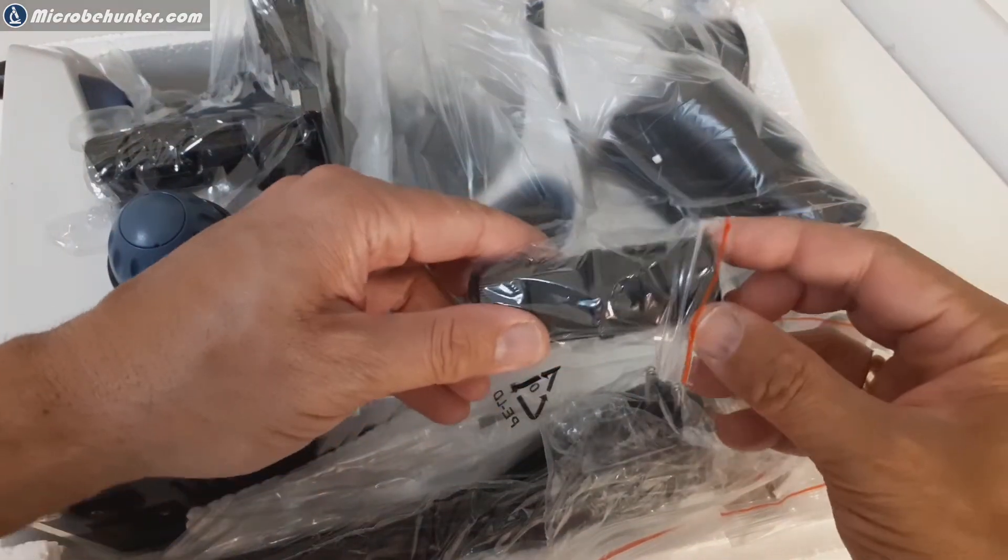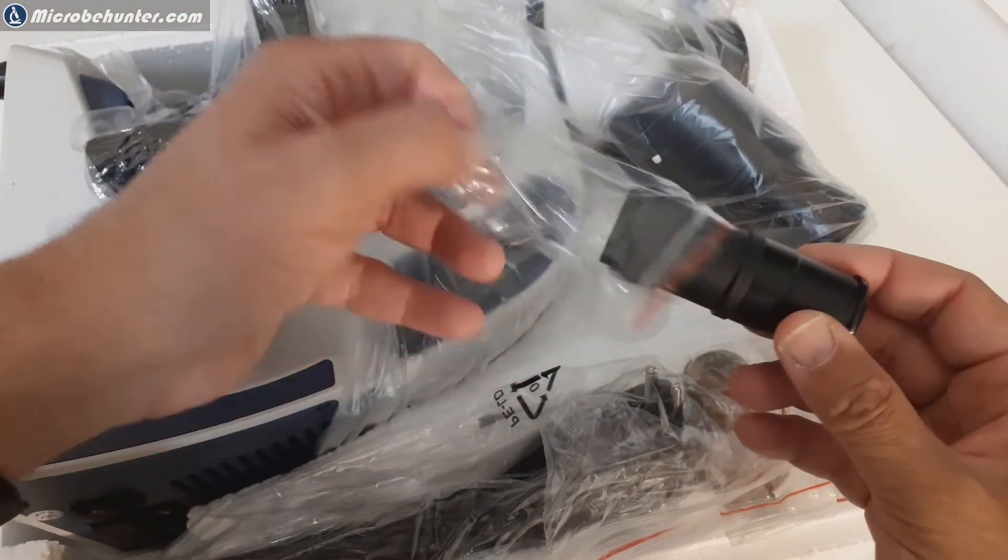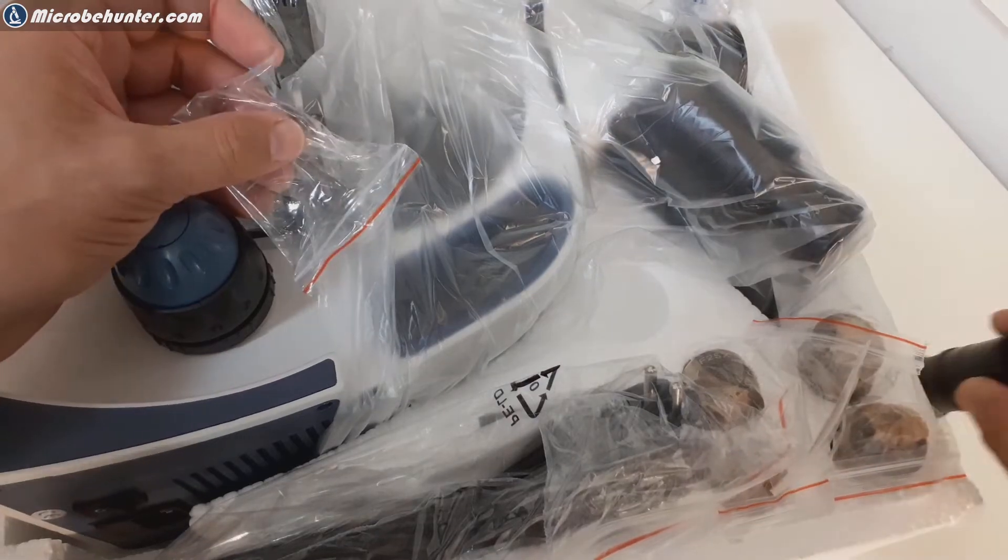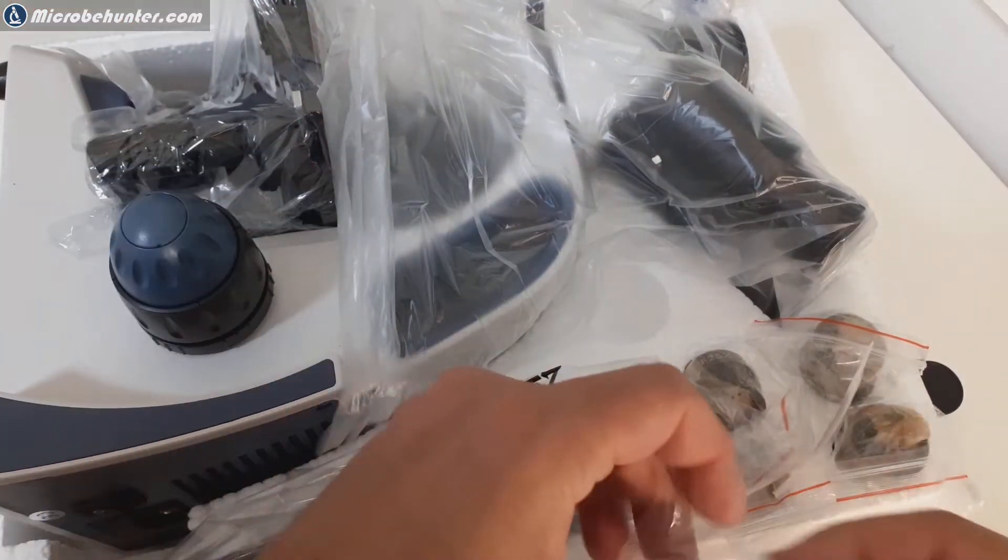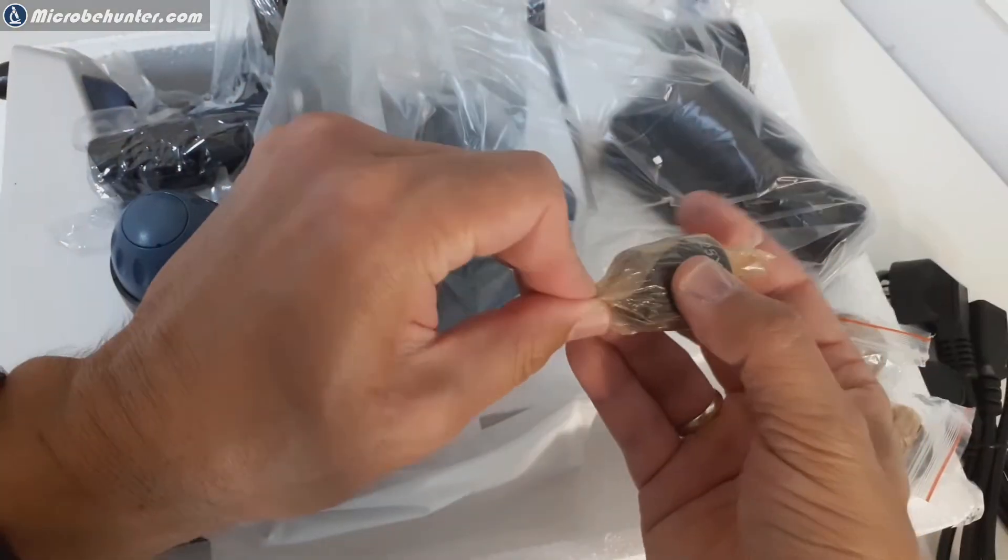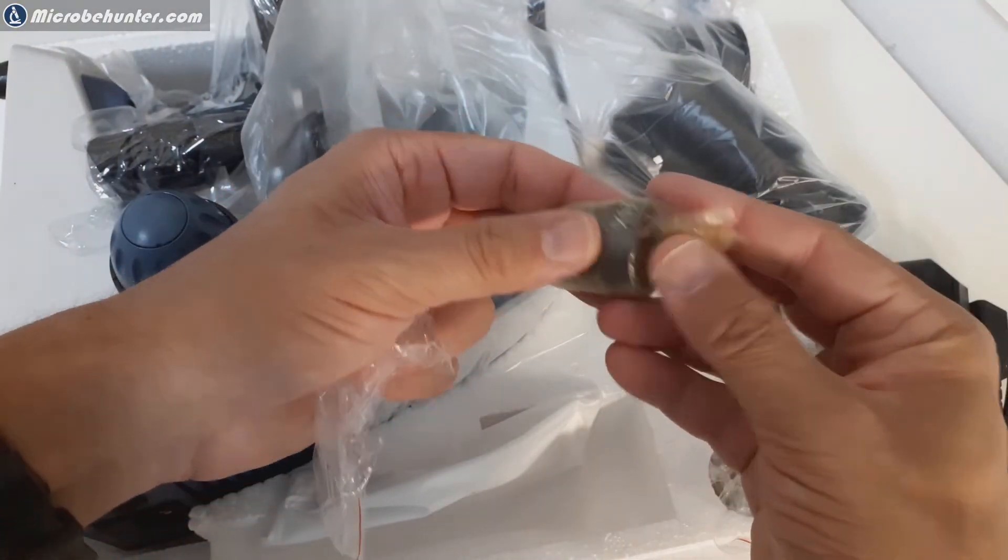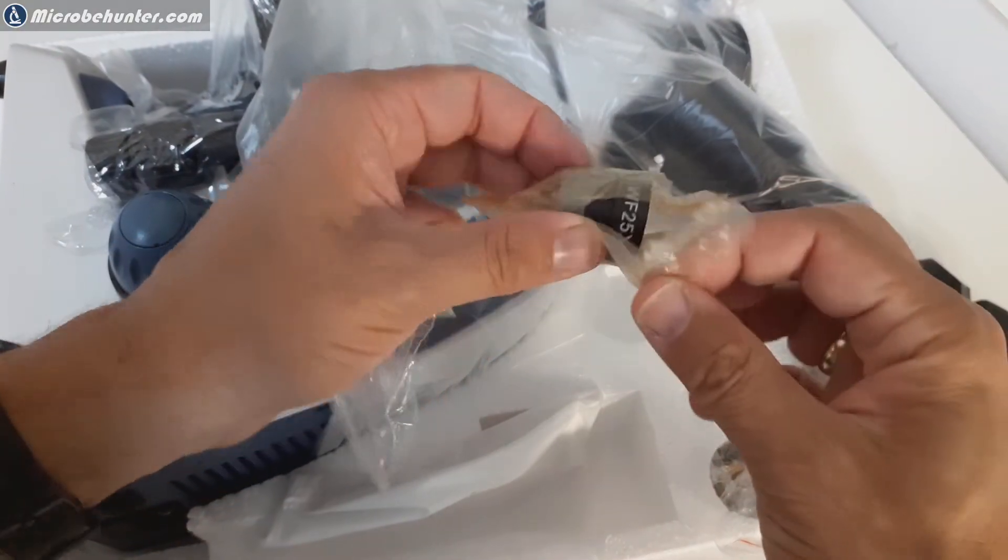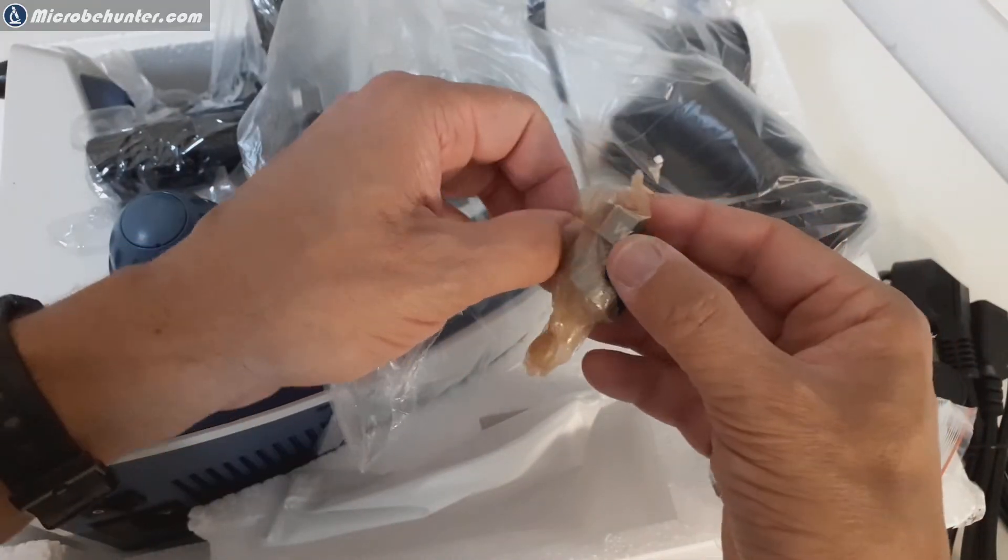Let's start taking out the things here. This is the trinocular tube for the photo camera which has to be still connected. Some other parts here - of course a power supply cable. It has an internal power supply and not an external one.